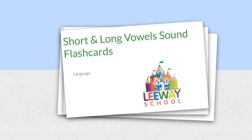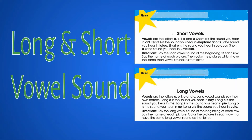Today we are going to learn short and long vowel sounds. What are vowels? Vowels are A, E, I, O, and U. These are vowels. Each vowel has two different sounds — a short sound and a long sound. So let's see what these sounds are.